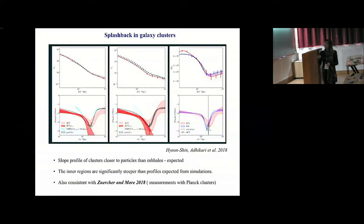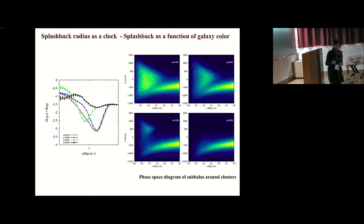Finally, in the last two slides, I'd also like to focus on another way of how we can use the splashback radius to learn about galaxy evolution. We can use the splashback radius basically as a clock. If you take a population of galaxies and you see a splashback feature in them, it basically tells you that those galaxies have been inside the halo for at least one orbit, or at least they've reached the first turnaround or pericenter in their orbits.